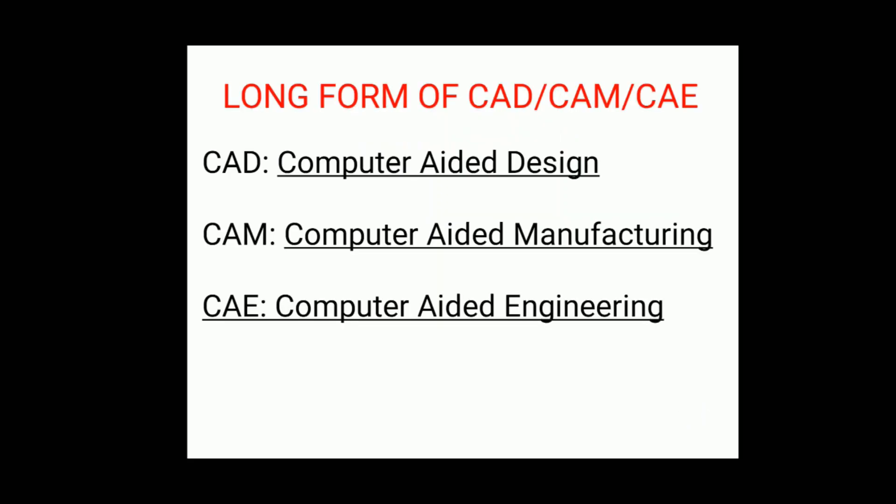CAD is nothing but Computer-Aided Design, CAM is Computer-Aided Manufacturing, and CAE is Computer-Aided Engineering. Basically, CAD is the use of computer methods to develop geometric modeling of a product in 3D form, such that geometric as well as manufacturing requirements can be examined. By using CAD we are going to create geometric modeling of part drawings in 2D and 3D form.